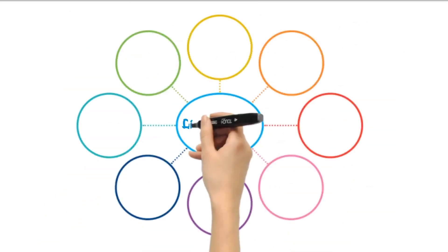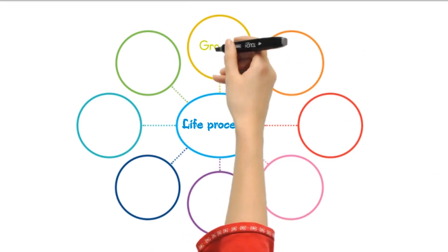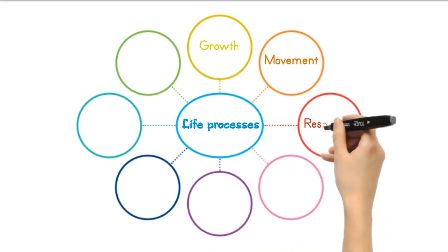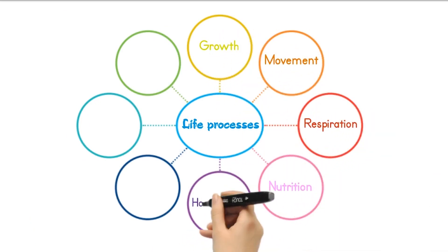There are 8 life processes which take place in most living things: growth, movement, respiration, nutrition, homeostasis, reproduction, sensitivity, and excretion.